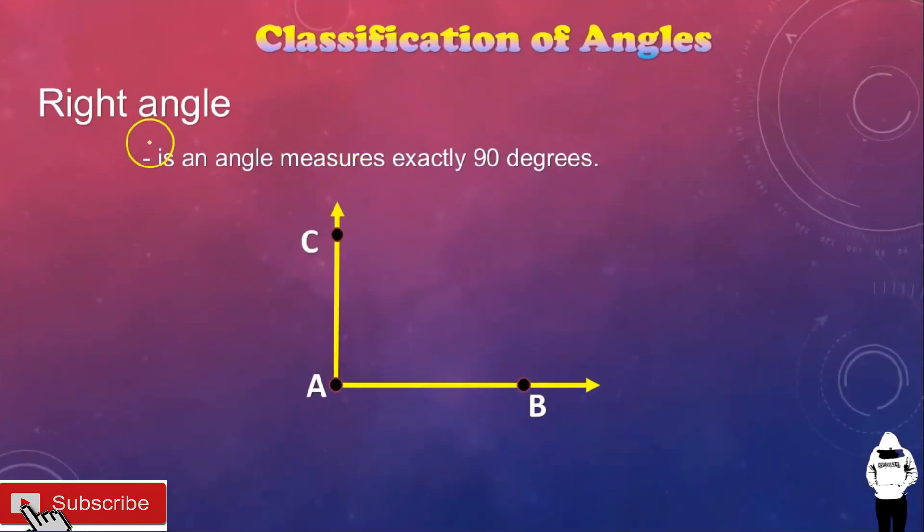Second, we have the right angle. What is right angle? It's an angle measures exactly 90 degrees. So, angle CAB measures exactly 90 degrees and this is a right angle.